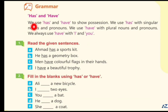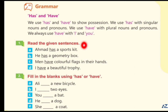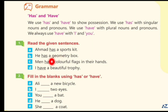Has and Have. We use has and have to show possession. We use has with singular nouns and pronouns. We use have with plural nouns and pronouns. We always use have with I and you. Read the given sentences: Ahmed has a sports kit. He has a geometry box. Men have colorful flags in their hands. I have a beautiful trophy. Fill in the blanks using has or have: Ali has a new bicycle. I have two eyes. You have a bat. He has a dog. She has a coat.